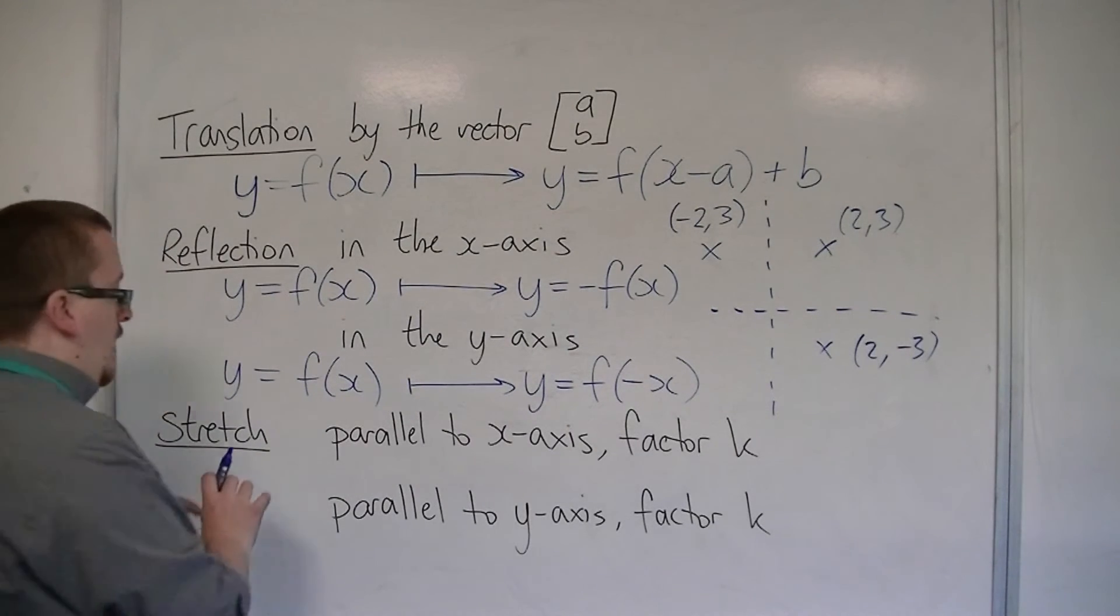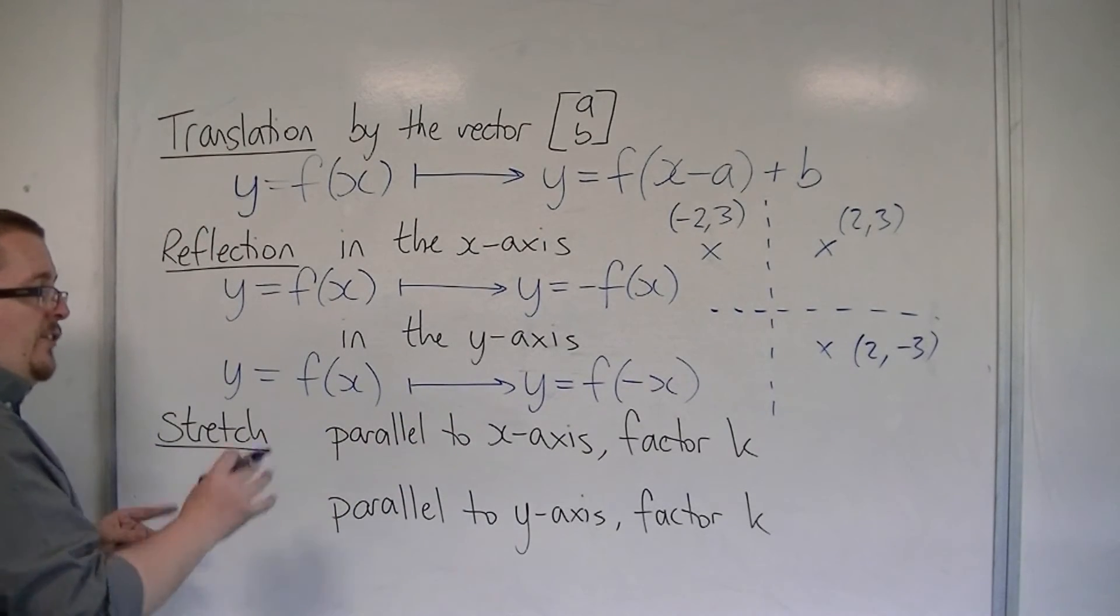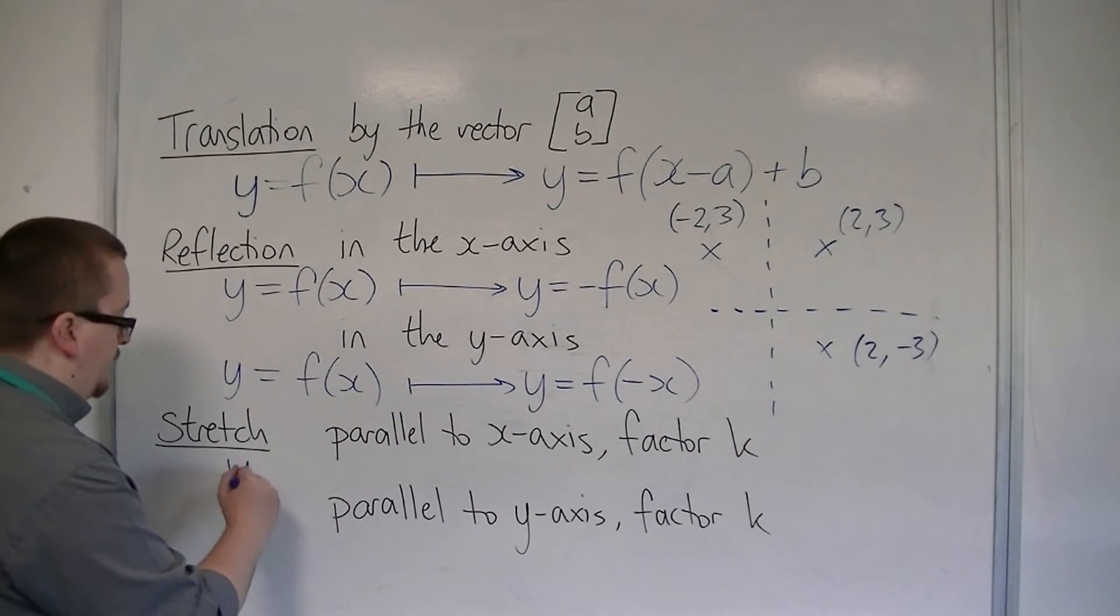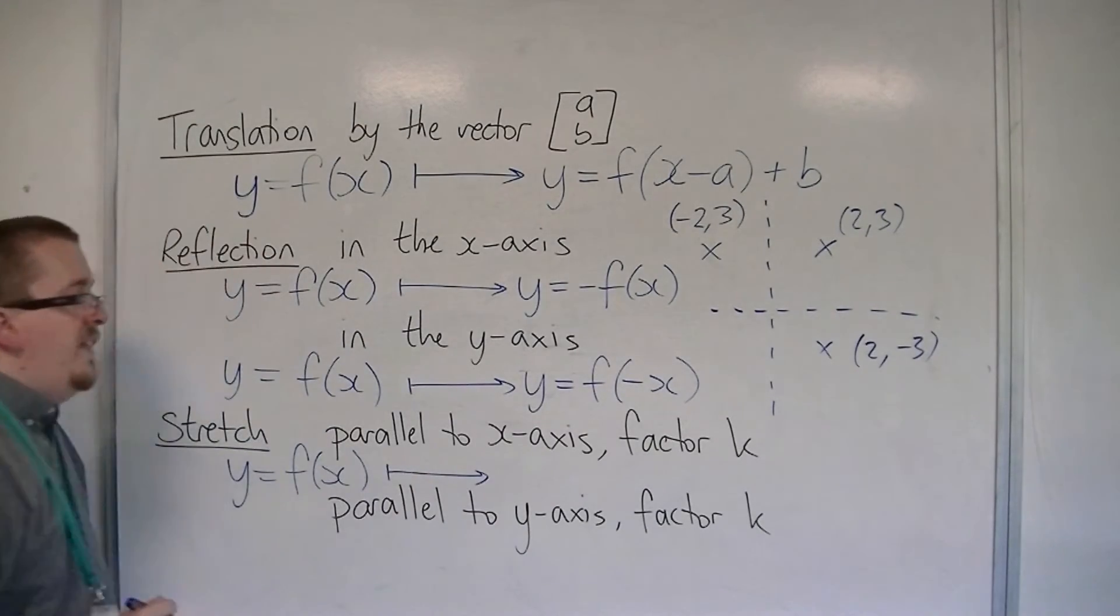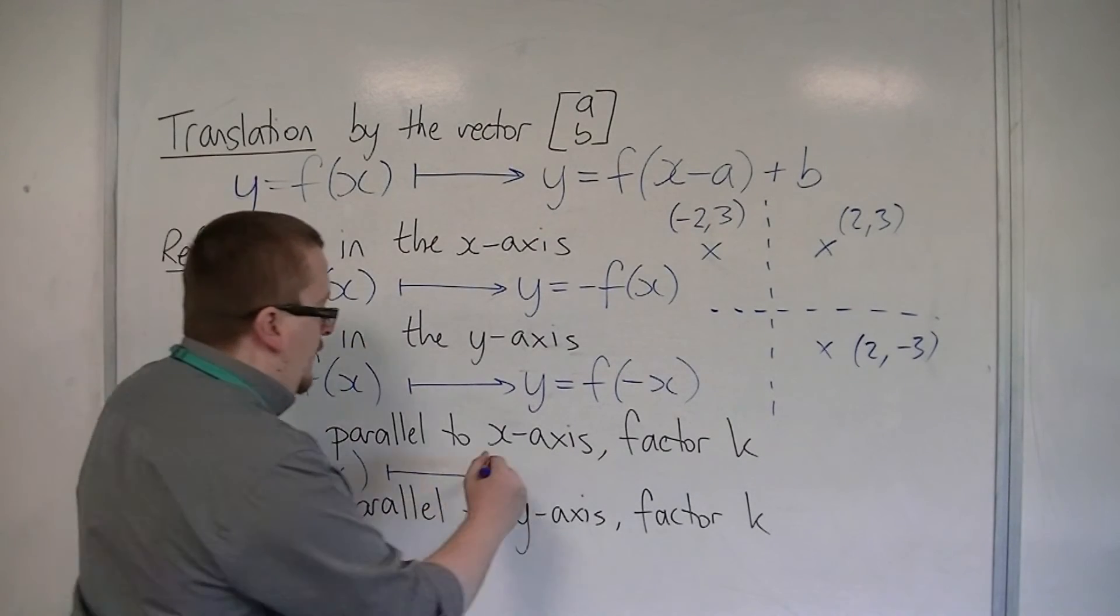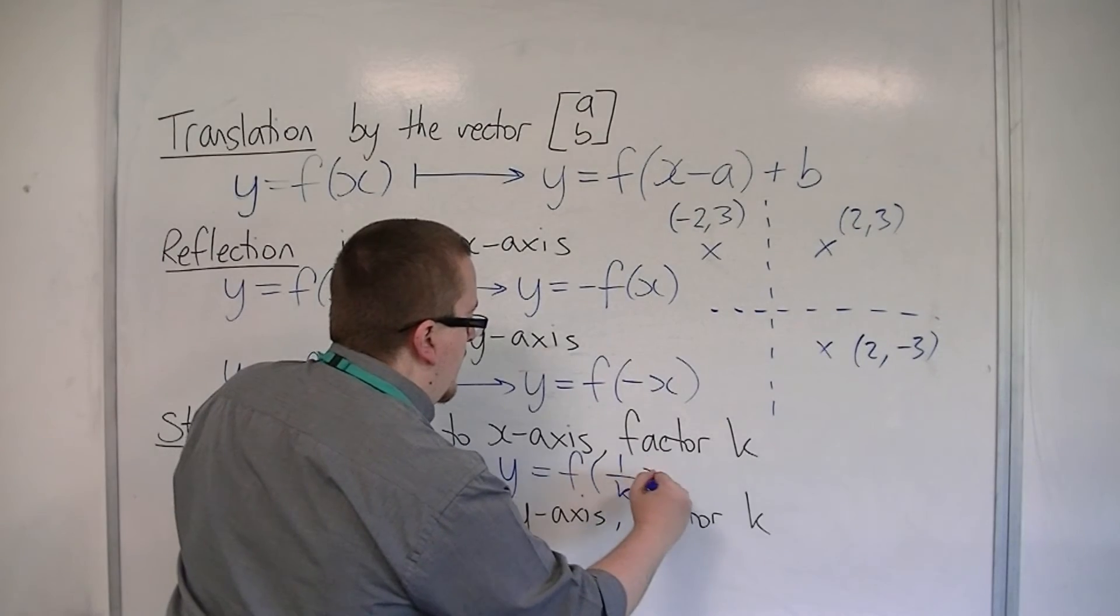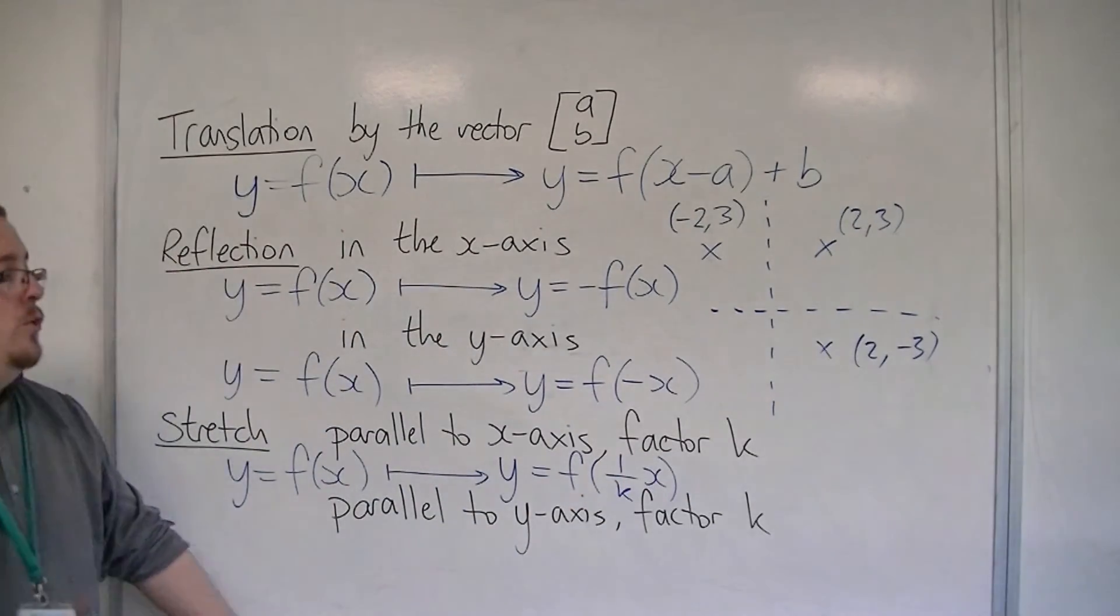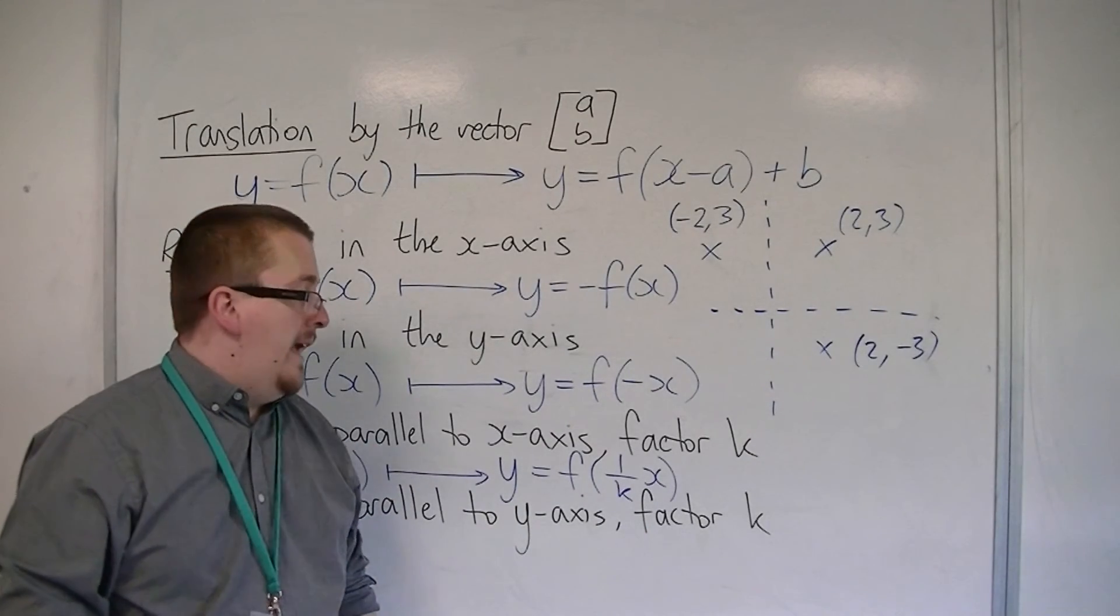Now if you're stretching, and you can either do it parallel to the x-axis or parallel to the y-axis, if it is parallel to the x-axis by factor k, then what happens is that we now have y equals f of (1 over k)x. Okay? So the x is replaced with (1 over k)x.